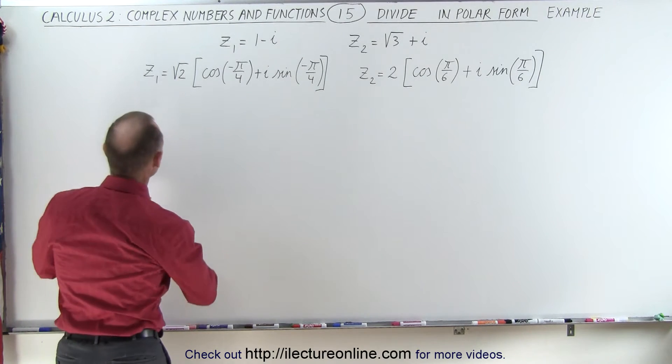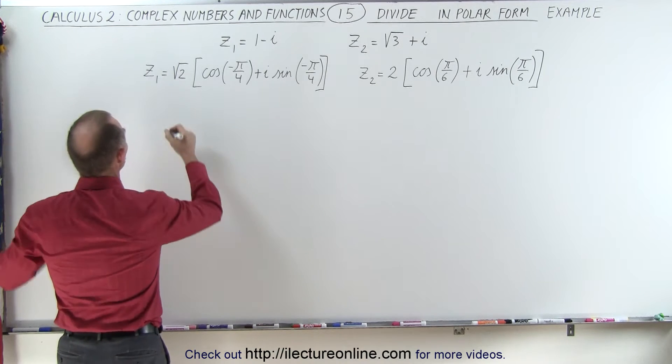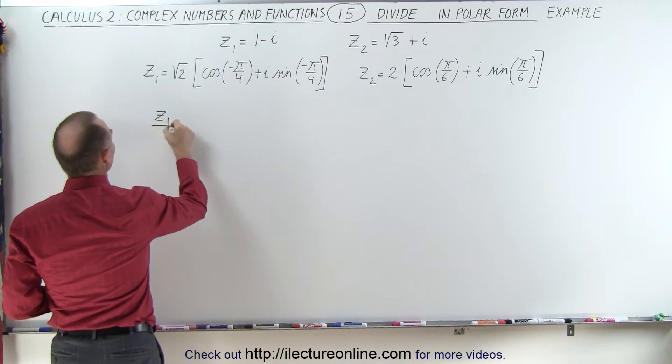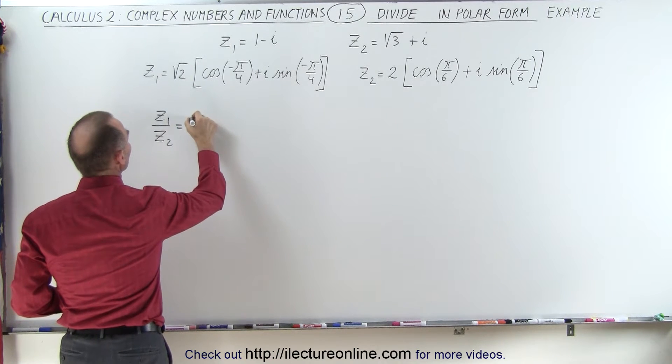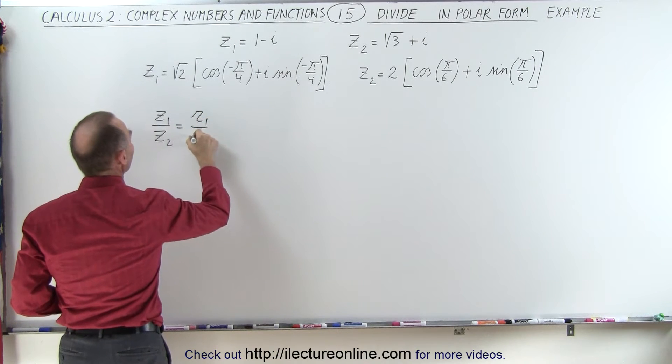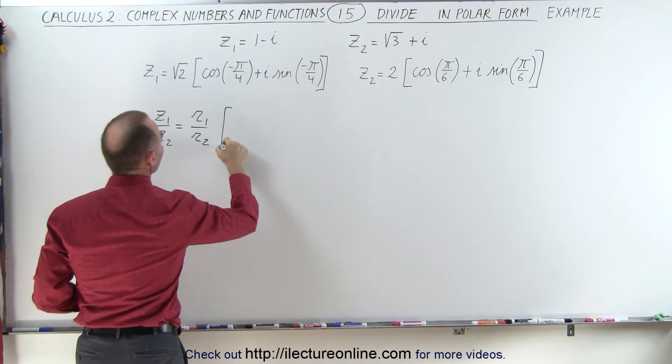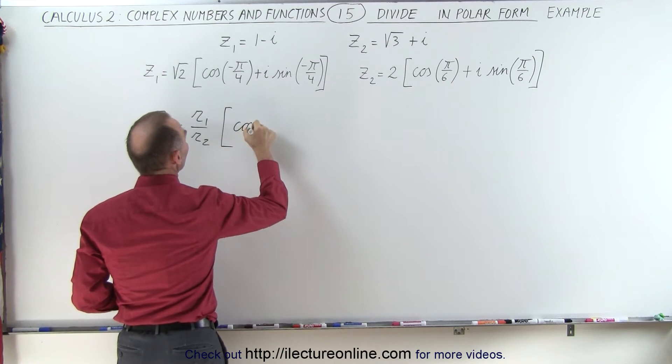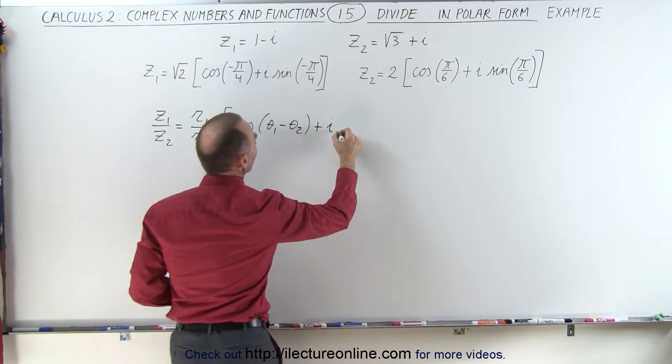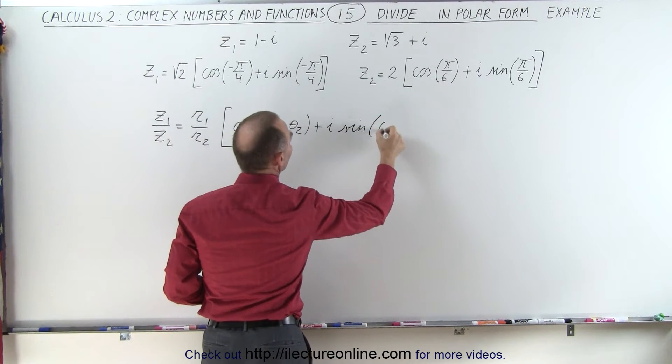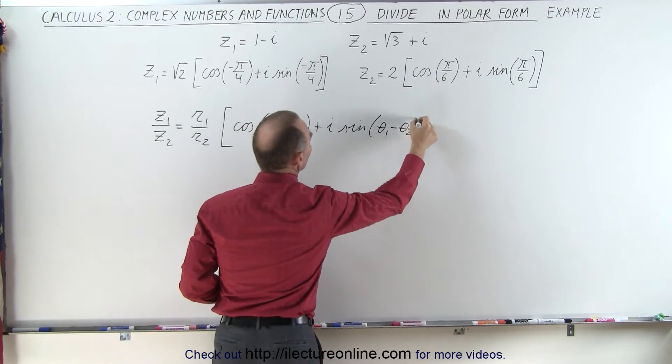Remember the equation from the previous video: if we divide Z1 by Z2, that equals the ratio of the moduli, R1 divided by R2, times the cosine of theta1 minus theta2 plus i times the sine of theta1 minus theta2.